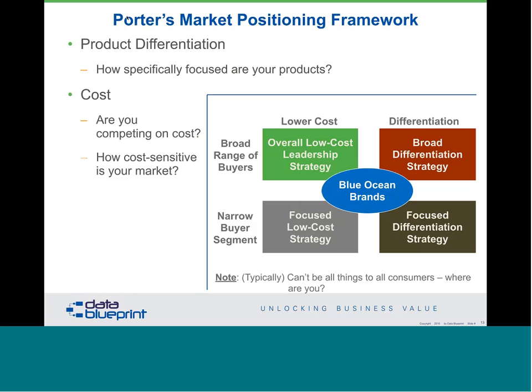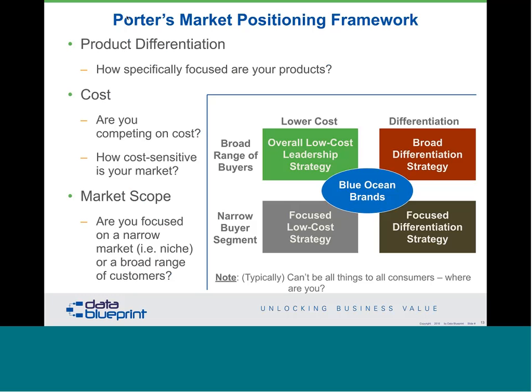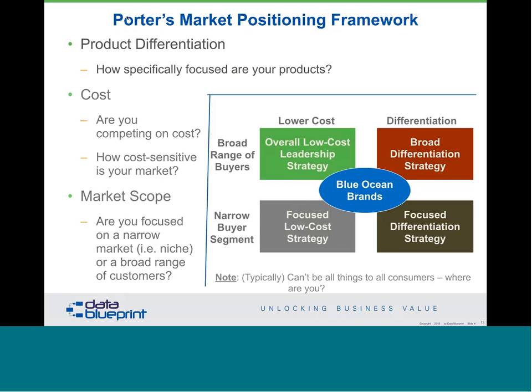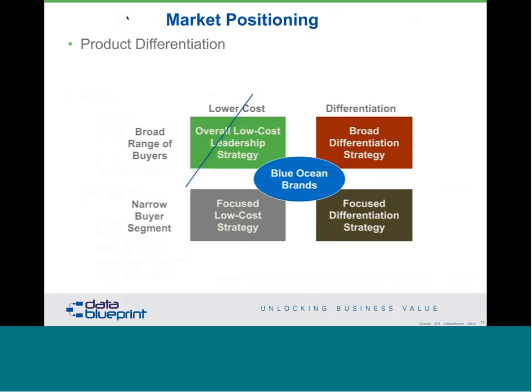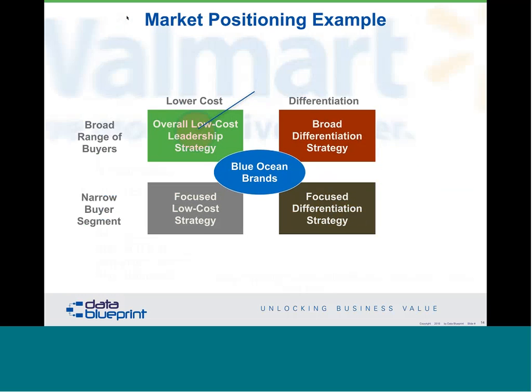Clearly Apple, with their focus on premier brands, is not focusing on cost — they try to keep the cost the same every year so that you don't feel bad spending over $600 for your latest and greatest iPhones. All this speaks to market scope. Let's look at a couple of examples. Walmart is going to fall into the broad range of buyers with low cost category — all of you listening know what Walmart's business strategy is: four simple words, everyday low price.